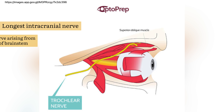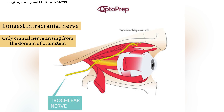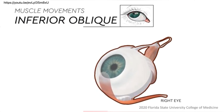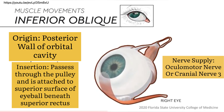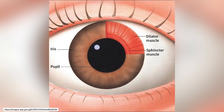The superior oblique muscle, on the other hand, has the following origin and insertion that functions to rotate the eyeball so that the cornea looks downward and laterally. It is innervated by the trochlear nerve, which is the longest intracranial nerve and the only cranial nerve arising from the dorsum of the brainstem.